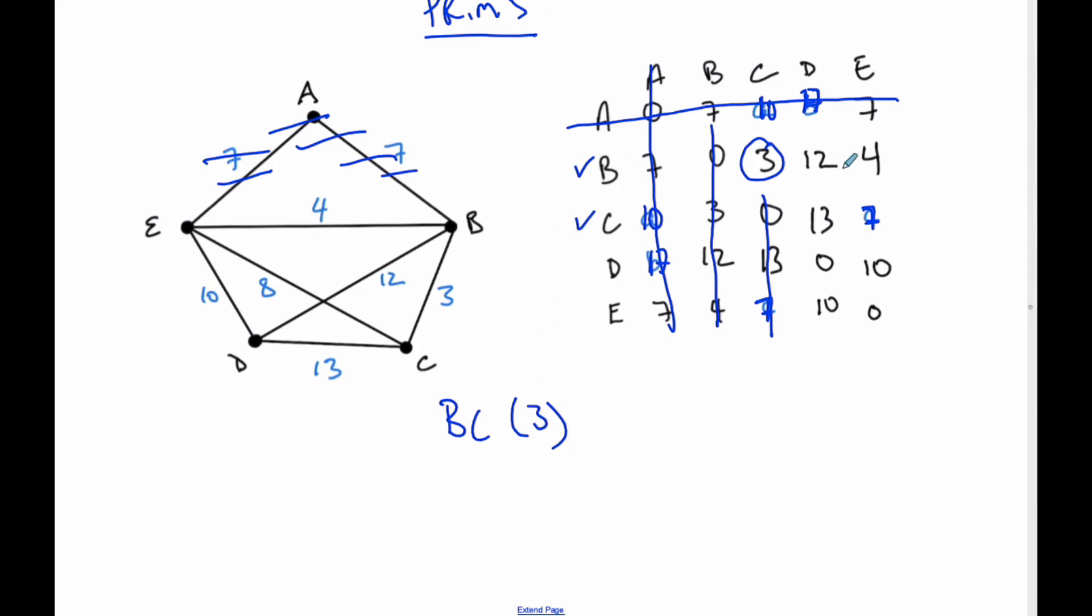Now I'm at B and C. I look across - the next smallest is BE, which is 4. Then I look at 10, 13, and 12. I can see that 10 is smaller than 12, so that's ED, which is 10. Now I have to add on the 2 smallest edges. If I look across the A column, I want to choose the 2 smallest. This was 10 and this is 17. I want to choose the smallest 2, which is 7 and 7. So it's 7 plus 7, which equals 14.